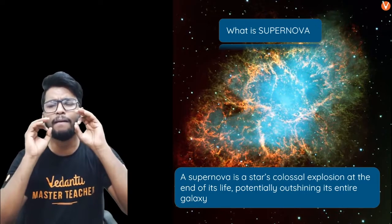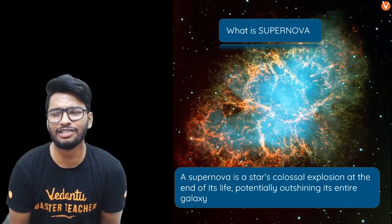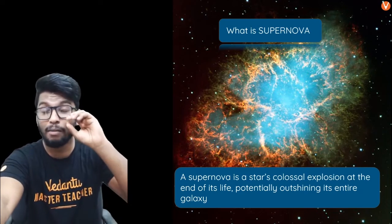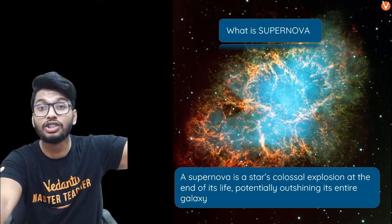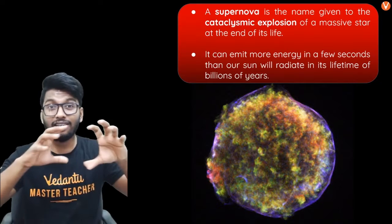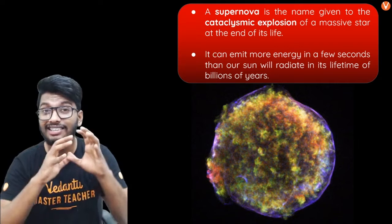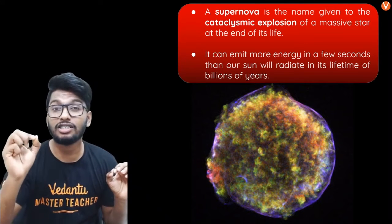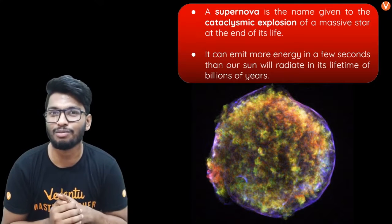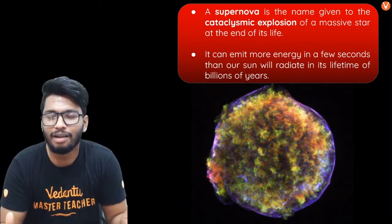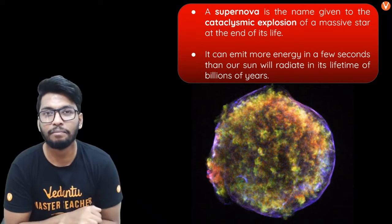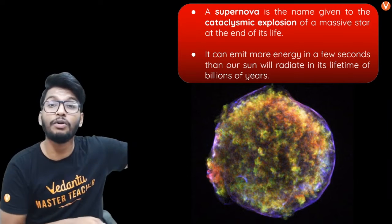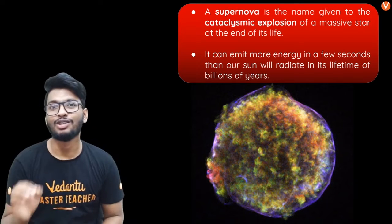A supernova is a colossal explosion, as mentioned on screen, where a tremendous amount of energy is released. The amount of energy released during a supernova is so immense that our Sun's entire lifetime of energy output would be less than what a supernova releases in just a couple of seconds. Our Sun, which releases tremendous energy that supports life as we know it, cannot match a supernova's energy output in its entire lifetime.